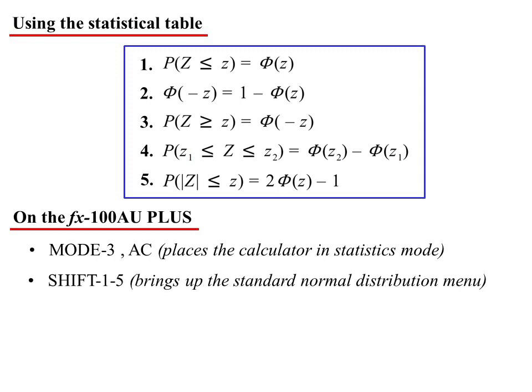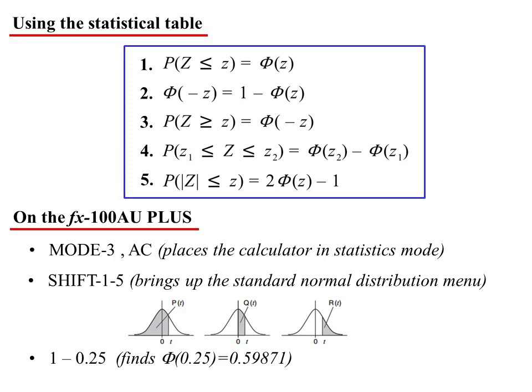If you go Shift 1, 5, that will bring up the standard normal distribution menu to choose from. There are three things it will do. You see P, Q and R, it's labelled. P finds the cumulative up to a point. Q finds from 0 up to a point, and R is going greater than. So if you were to press 1, which would access P, and go 0.25, then it would find what we just looked up on the table for the cumulative up to 0.25. Of course, it does it to more accuracy, because the calculator gives you more digits. It comes back with 0.59871.